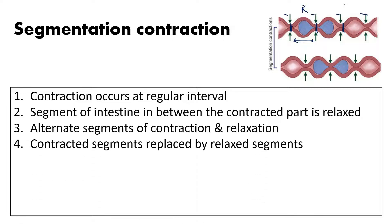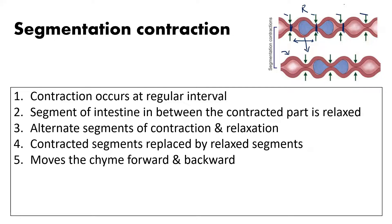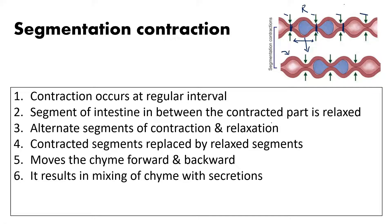In the next moment, the contracted segments become relaxed and the relaxed segments become contracted. Because of this, the chyme present in the small intestine moves forwards and backwards repeatedly. This forward and backward movement results in mixing of the chyme with secretions present in the intestine — intestinal secretions as well as biliary secretions from the gallbladder and liver.